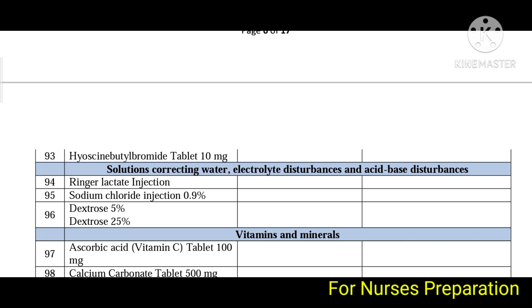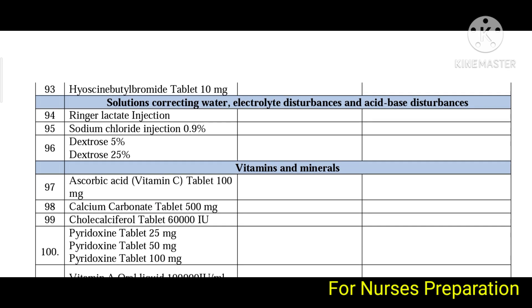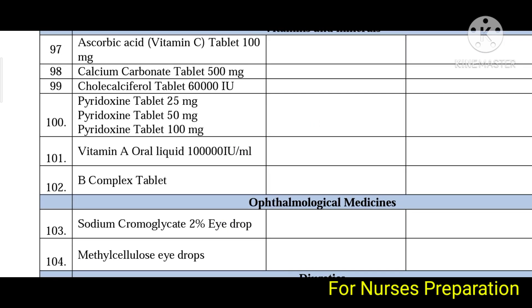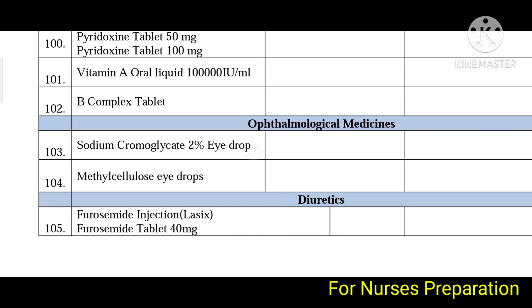Solutions for correcting water, electrolyte disturbances, and acid-base balance include Ringer's lactate injection, sodium chloride injection 0.9%, dextrose 5%, and dextrose 25%. Vitamins and minerals in this category include ascorbic acid (vitamin C), calcium carbonate, calciferol, and pyridoxine.